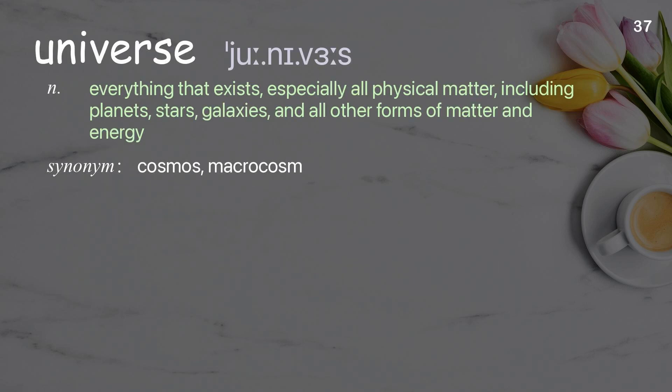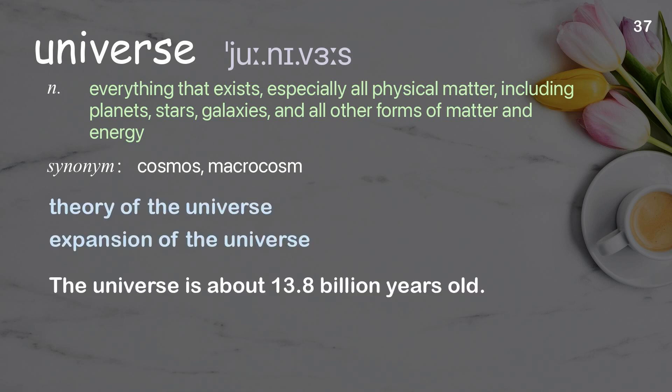Universe: Everything that exists, especially all physical matter, including planets, stars, galaxies, and all other forms of matter and energy. Examples: Theory of the universe. Expansion of the universe. The universe is about 13.8 billion years old.